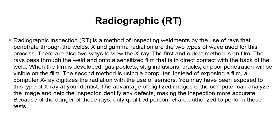Radiographic Inspection RT is a method of inspecting weldments by the use of rays that penetrate through welds. X and gamma radiation are the two types of waves used for this process. There are also two ways to view X-rays. The first and oldest method is on film. The X-rays pass through the weld and onto a sensitized film in direct contact with the back of the weld. When the film is developed, gas pockets, slag inclusions, cracks, or poor penetration will be visible on the film.